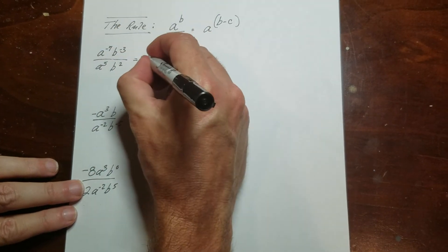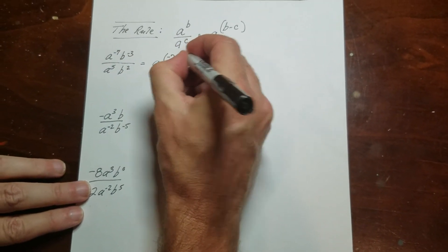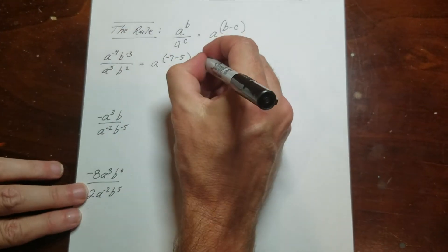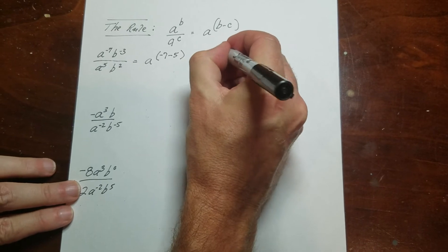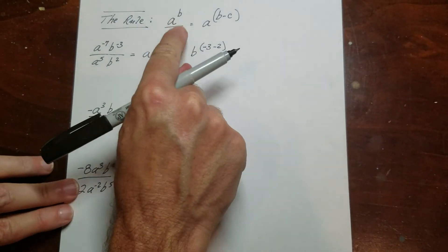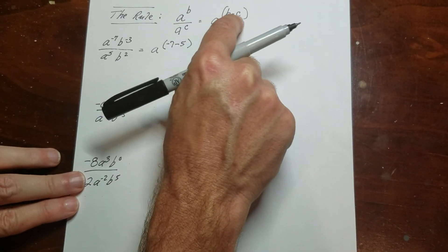So this is a to the negative 7 minus 5. And then I have a b negative 3 minus 2. So another way to approach this is to just use the rule. So the rule is, if this is dividing this, it's a b minus c.